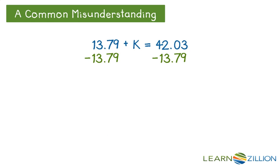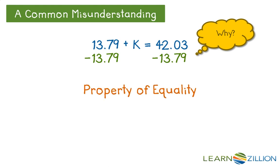One misunderstanding that can be made from solving equations is not understanding why we must perform the inverse operation to both sides of the equation. We do it because of the property of equality. It says that whatever we do to one side of the equation, we must do to another. Let's see why.